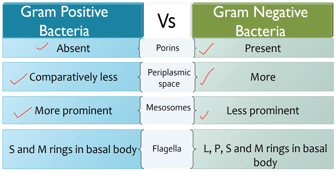Flagella are hair-like appendages found in the majority of bacteria which assist locomotion. The basal body is one component of the flagella in the form of rings embedded in the cell envelope spanning the inner periplasmic space. Gram-negative bacteria contain the L-ring in the outer membrane, P-ring in the periplasmic space, and MS-ring in the cytoplasmic membrane. Whereas gram-positive bacteria only contain the M and S-ring in the cytoplasmic membrane.